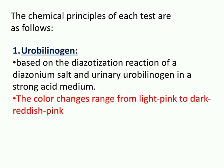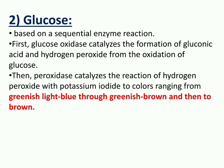Now let's look into the chemical principle of each test. First is urobilinogen — this is based on the diazotization reaction of diazonium salt and urinary urobilinogen in a strong acid medium. The color ranges from light pink to dark red-pink.